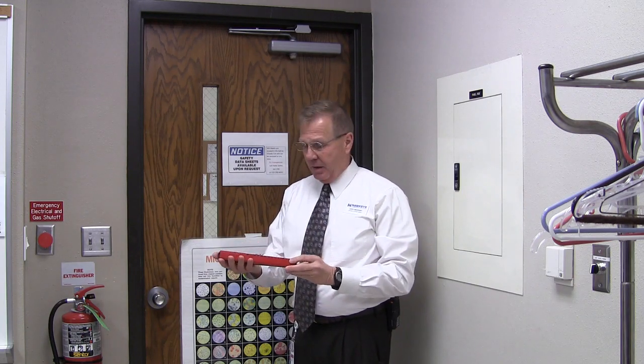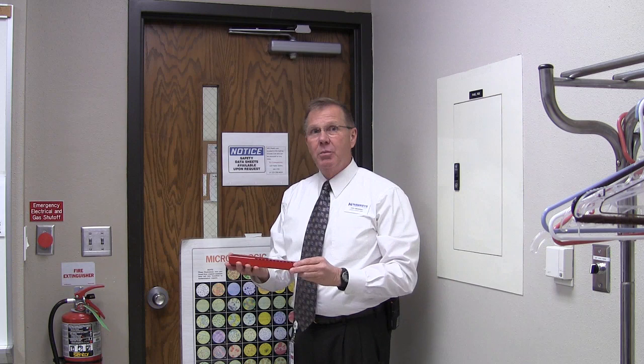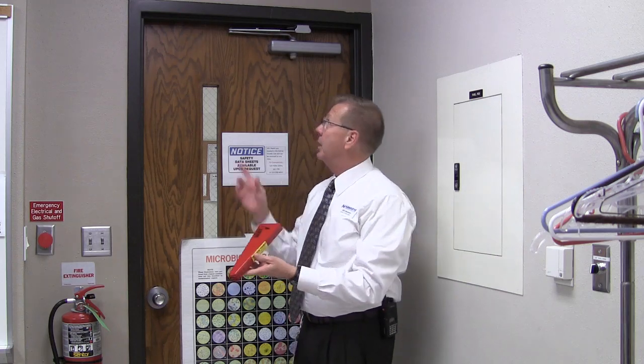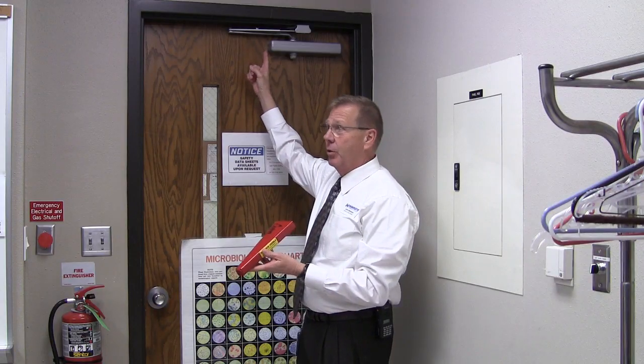Today we're demonstrating yet another door security device known as the sleeve. It's a heavy gauge metal with a channel in the back. The purpose behind this is to put it on a door closing device as shown on this door.